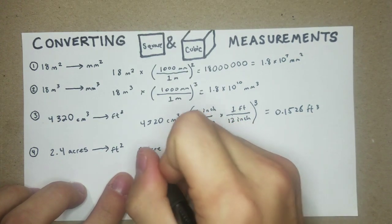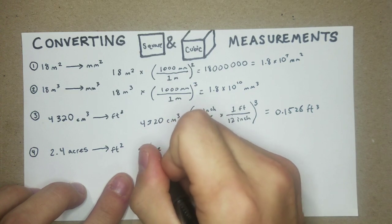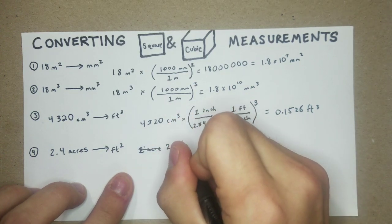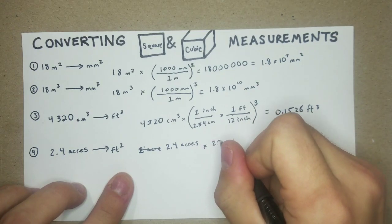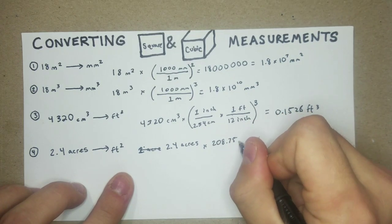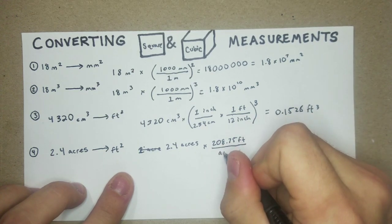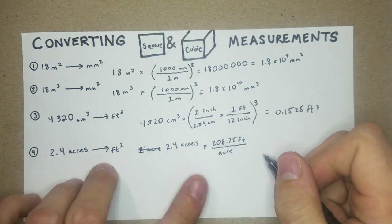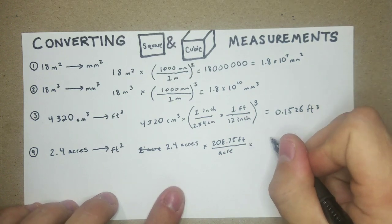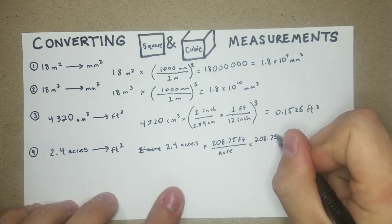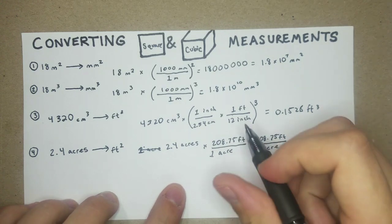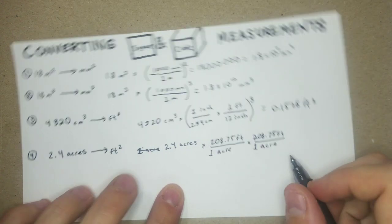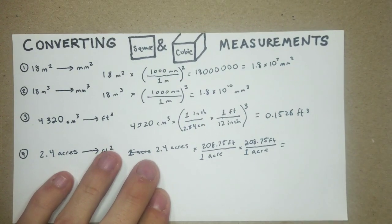So first off, 2.4 acres times 208.75 feet per acre. That's based on the length of an acre. Times 208.75 feet per acre. That's based on the length, and we're just going to multiply that out. Shouldn't be too bad.